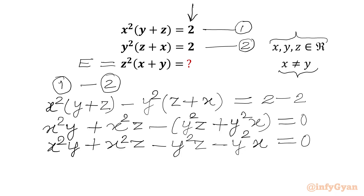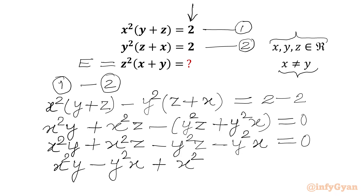We will write the first and last terms altogether: x squared y minus y squared x plus x squared z minus y squared z equal to 0.